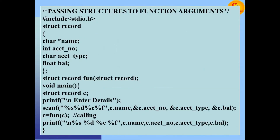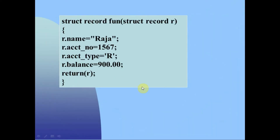The result output shows: name 'Raja', account number 1567, type, and balance 900.00 as the returning value.